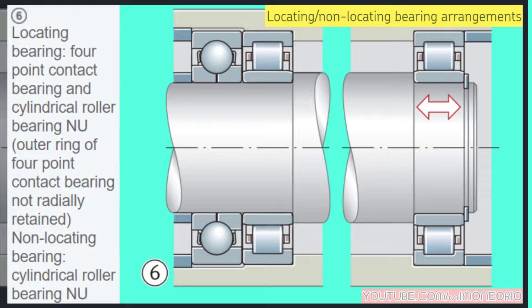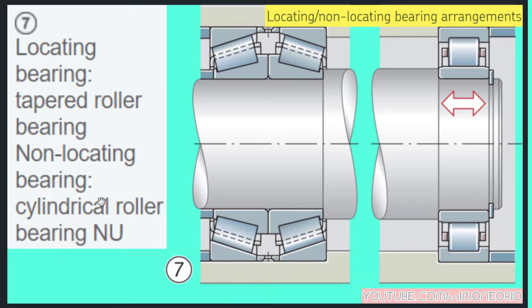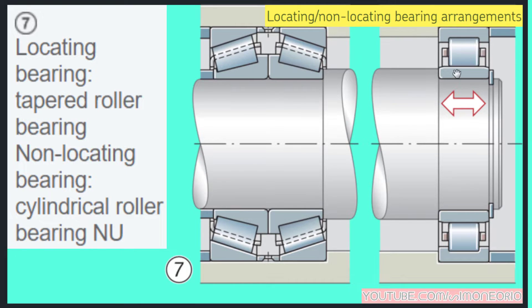The seventh example: the locating bearing is a taper roller bearing, and the non-locating bearing is a cylindrical roller bearing. The locating bearing is all blocked, and the non-locating bearing can slide axially.